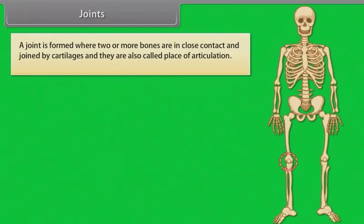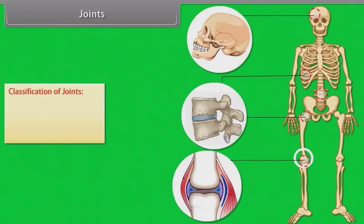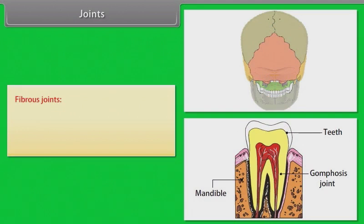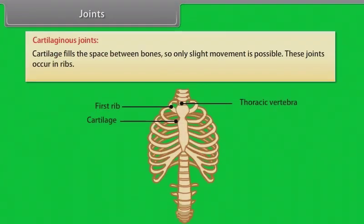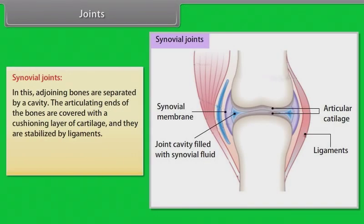A joint is formed where two or more bones are in close contact and joined by cartilages; they are also called places of articulation. Classification of joints: fibrous joints, cartilaginous joints, and synovial joints. Fibrous joints connect bones without allowing any movement; they hold the teeth in the sockets and are also present in the skull. Cartilaginous joints have cartilage filling the space between bones so only slight movement is possible; these joints occur in the ribs. In synovial joints, adjoining bones are separated by a cavity, the articulating ends of the bones are covered with a cushiony layer of cartilage, and they are stabilized by ligaments.